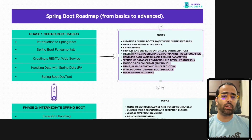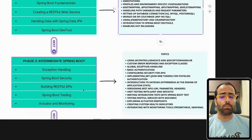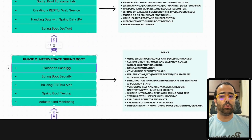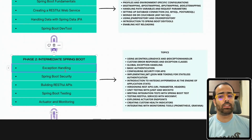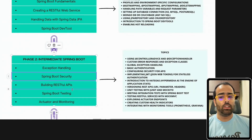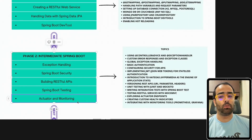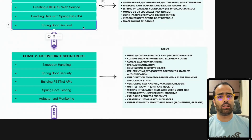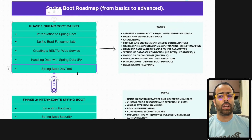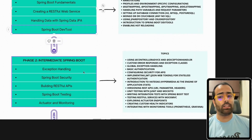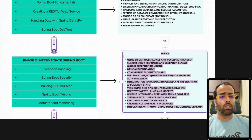Once you are done with Phase 1, move to the next level: Intermediate Spring Boot. In intermediate Spring Boot, you cover everything you need for production-level applications. You should know how to handle exceptions, how to implement security, how to work with APIs, how to write unit and integration test cases, and how to use Actuator to monitor your application after deployment.